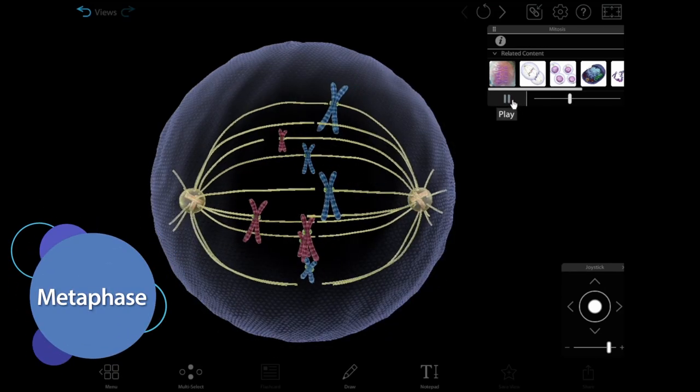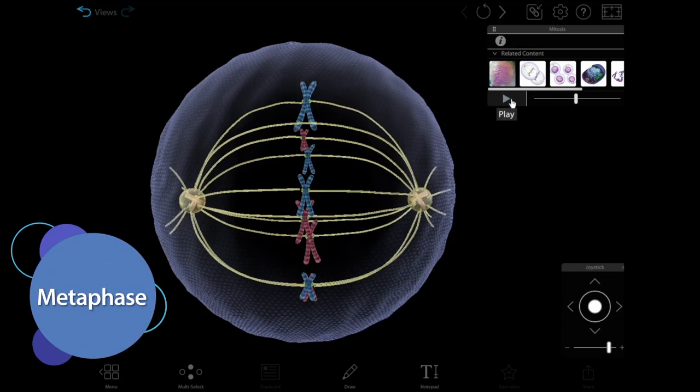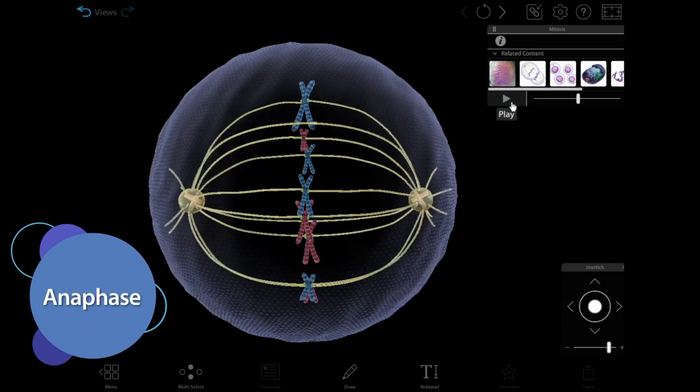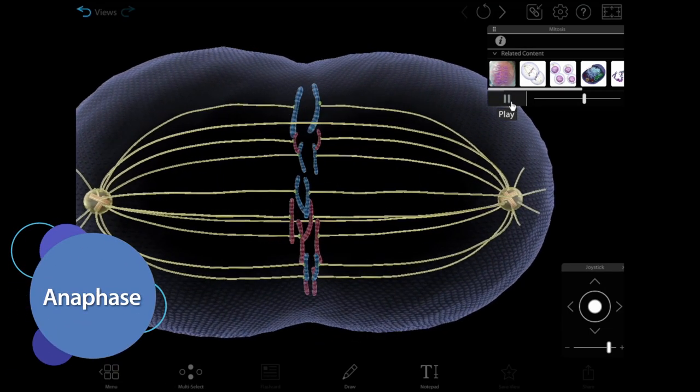During metaphase, spindle fibers line up the chromosomes in the middle of the cell. During anaphase, the spindle fibers pull the sister chromatids apart.